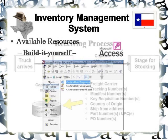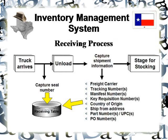As we get started, I'll remind you of the processes we were discussing earlier — here we're going over the receiving process. The truck arrives, and this is where you would normally capture the seal number on the truck as part of a CT PAT example or security, which would go into the receiving table. Then your material handlers would unload the truck.